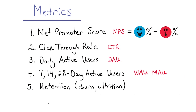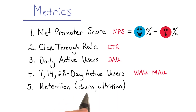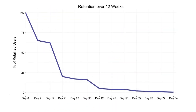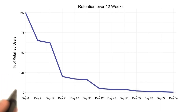Another useful metric is retention. It's the opposite of churn or attrition. Retention describes the number or the percent of users you keep over a certain period of time, while not counting any new users you acquired during that same time interval.